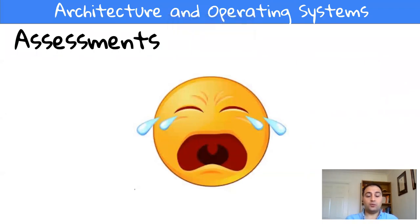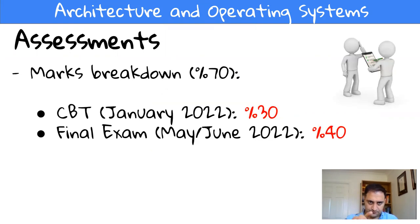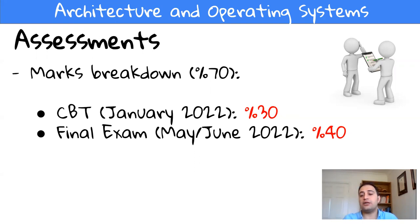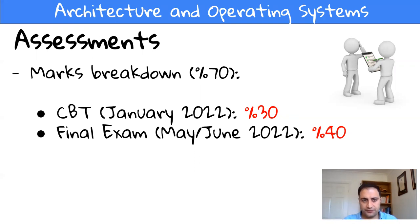For the assessments — again, for the computer part — 70% of your mark is from the computer part. For this 70%, you have two assessments. One of them is a computer-based test, CBT, which will take place in January 2022. The weighting is 30%, and it covers all materials from week one till week 12, the first teaching block. It's an hour-long computer-based test. The final exam will be in May or June — you will be notified about exact dates. It covers the second teaching block and the weight is 40%.